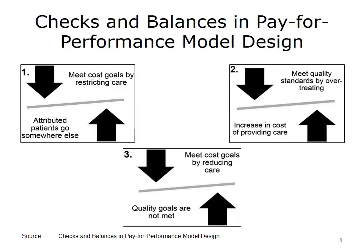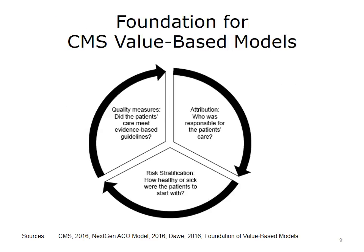Finally, in image three, it is possible that the ACO could try to meet cost goals by reducing care. There is another check and balance here, because the quality goals of the model encourage comprehensive care. These goals exist to assure that providers deliver care that promotes quality outcomes. With that background, let's define some key concepts and take a closer look at how they work in value-based models to align payments and outcomes so that quality is maintained or improved while costs are reduced.